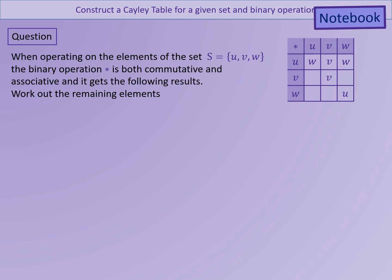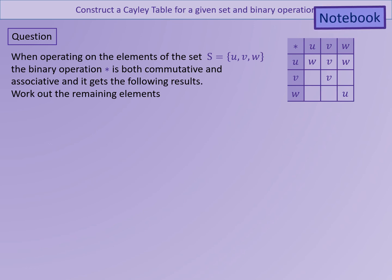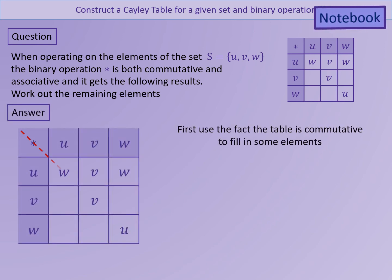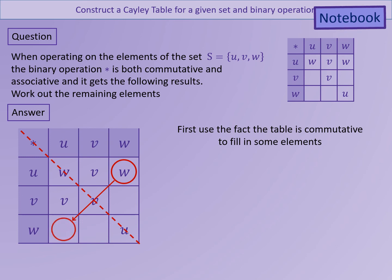Here is another partial Cayley table for a binary operation. We are told that the binary operation is both commutative and associative, and we can use this to help work out missing elements. Starting with the commutativity property, we can reflect in the leading diagonal to find some of the missing elements. However, two elements still cannot be filled in this way, so we now need to use the associativity property.